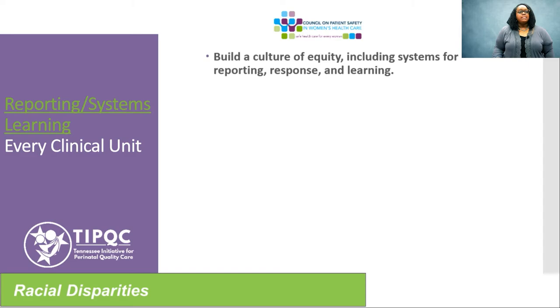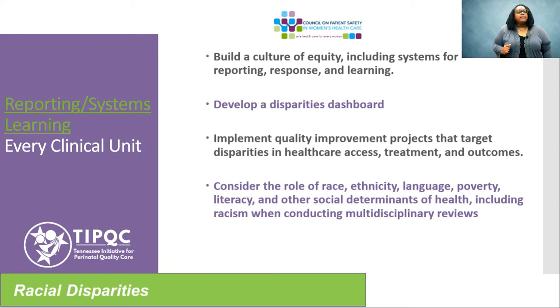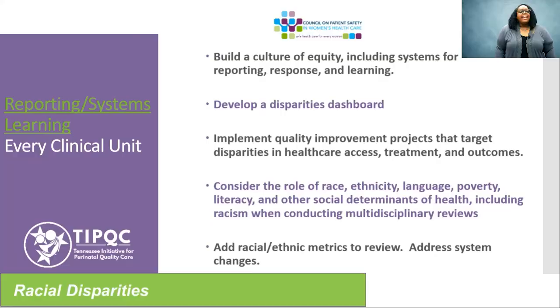Develop a disparities dashboard that monitors process and outcome metrics stratified by race and ethnicity, with regular dissemination of stratified performance data to staff and leadership. Implement quality improvement projects that target disparities in healthcare access, treatment, and outcomes. Consider the role of race, ethnicity, language, poverty, literacy, and other social determinants of health — including racism at the interpersonal and system level — when conducting multidisciplinary reviews of severe maternal morbidity, mortality, and other clinically important metrics. Add as a checkbox on review sheets: did race or ethnicity, implicit bias, language barrier, or specific social determinants of health contribute to the morbidity? And if so, are there system changes that could be implemented that would alter the outcome?